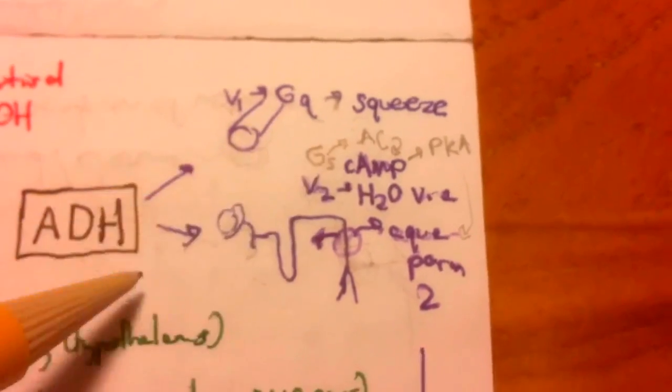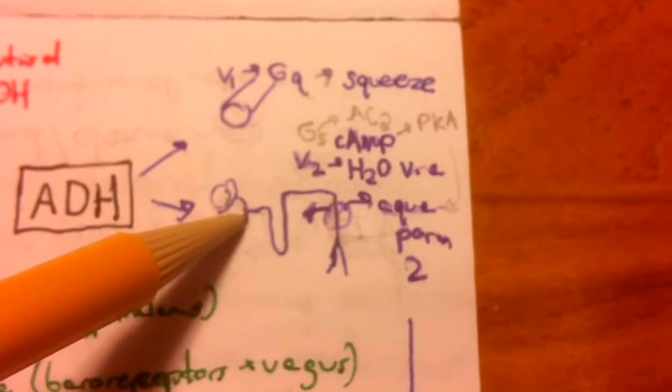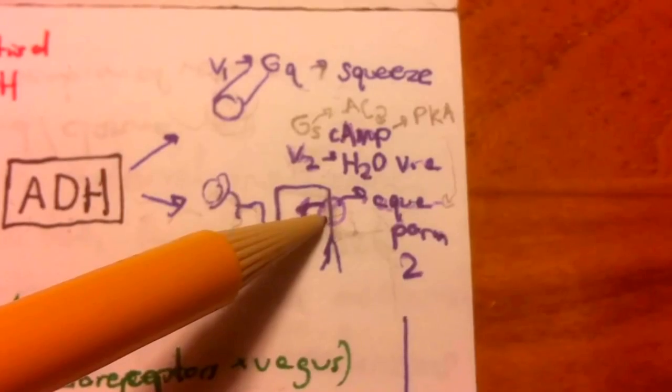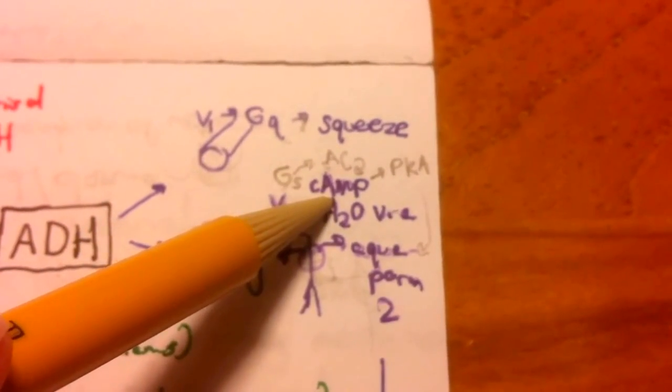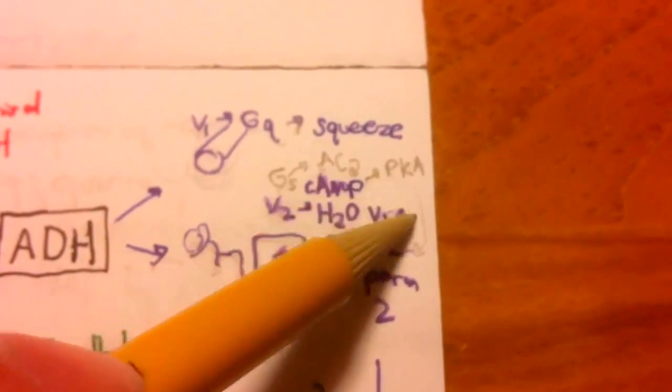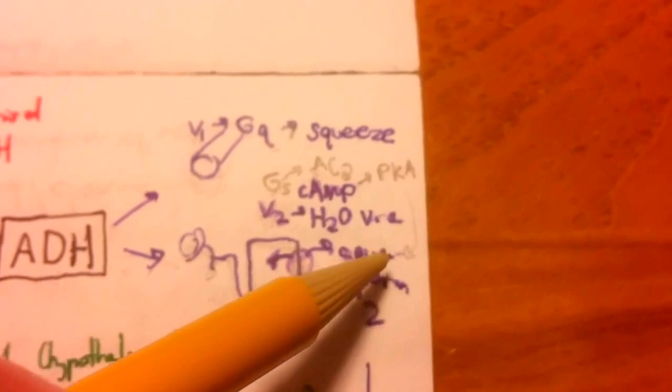The V2 receptor is on the principal cell of the collecting duct. It is a Gs-coupled receptor that activates adenyl cyclase, producing cyclic AMP, which activates protein kinase A. Protein kinase A phosphorylates vesicles inside the principal cell that contain aquaporin channels, causing these vesicles to fuse with the luminal membrane. This intercalation of aquaporin allows water to enter from the lumen and travel basolaterally, enabling water reabsorption.